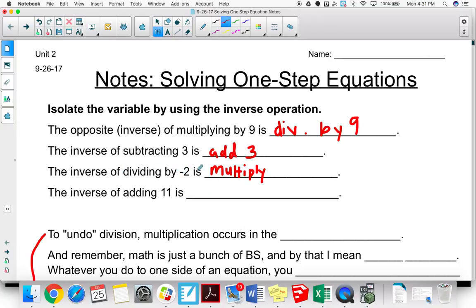So the inverse of dividing by -2 is to multiply by -2. So when you're multiplying and dividing, don't change the sign. Keep the sign the same. The only time you change the sign is when we're adding and subtracting. So the inverse of adding 11 would be subtracting 11. I'm just going to abbreviate. There we go.